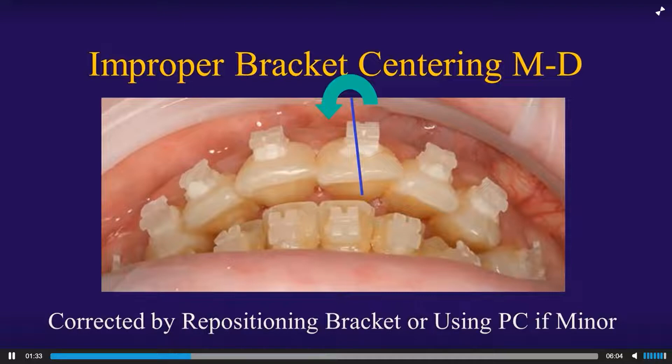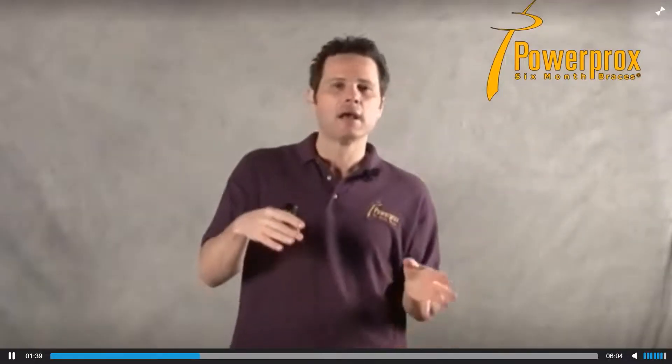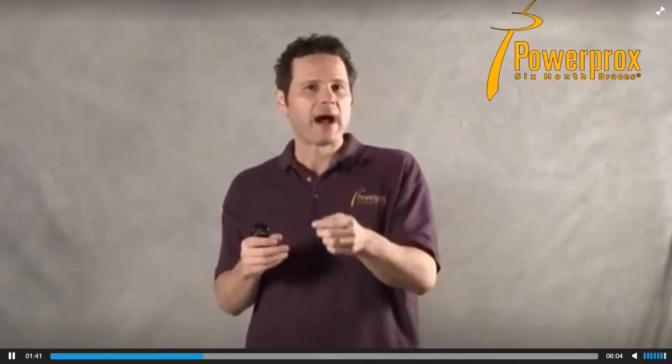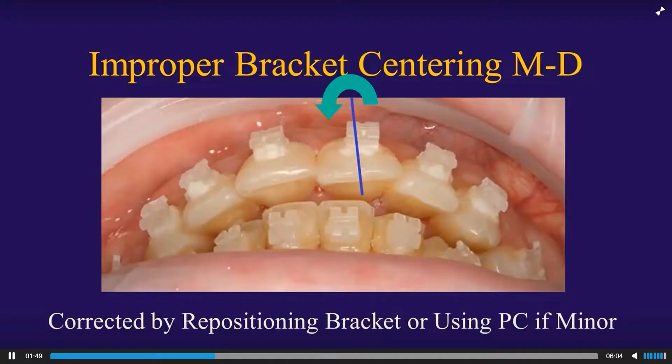If it's off just a little bit and you're towards the end of treatment, you can sometimes override that rotation by taking a power chain from your anchor tooth — the canine — to your target tooth, in this case the central incisor. That can sometimes override it when you're towards the end, but the great majority of the time you're going to remove and reposition that bracket.